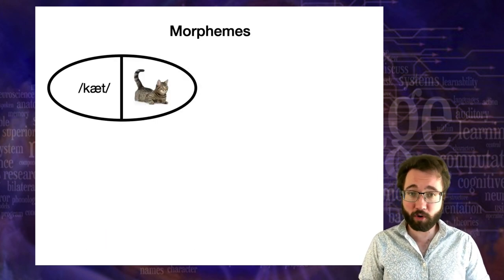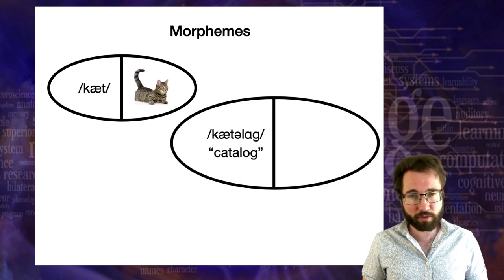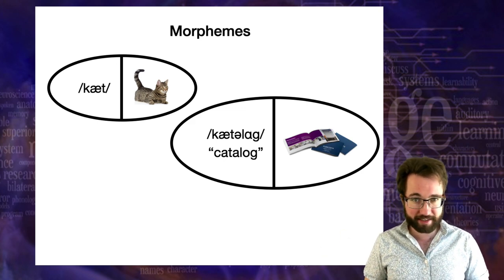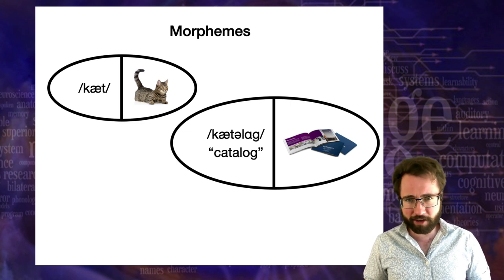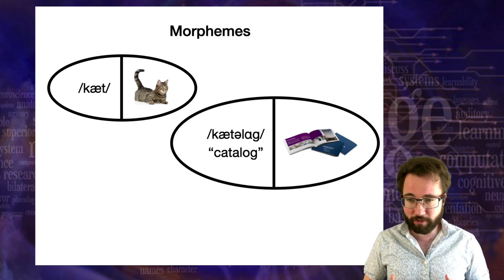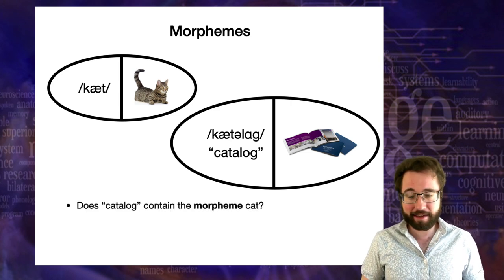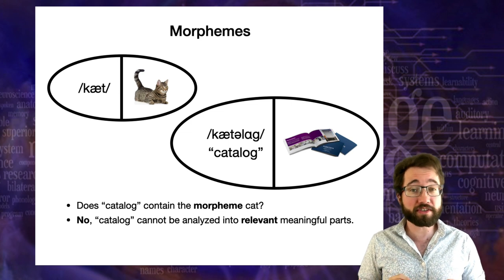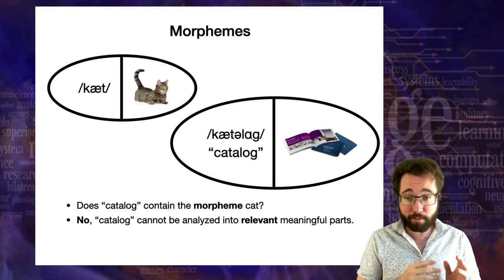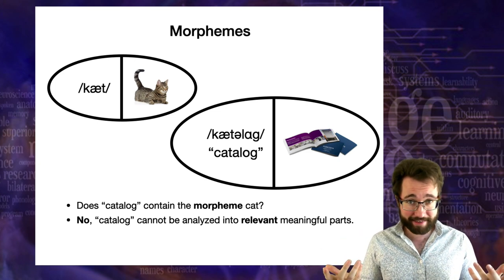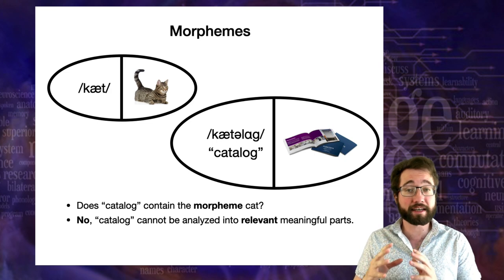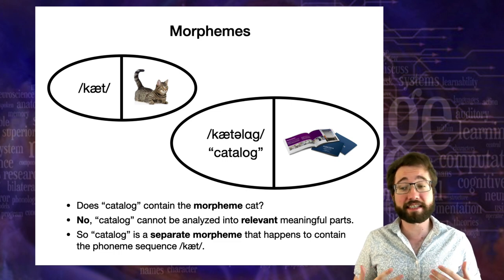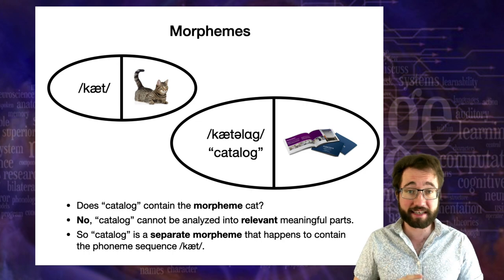Here's another example. We have the morpheme 'cat' referring to the feline creature. We also have the word 'catalog,' which refers to items containing listed information. Does 'catalog' contain the morpheme 'cat'? No — because 'catalog' cannot be analyzed into relevant meaningful parts. A catalog has nothing to do with a cat. The morpheme 'cat' is not making a regular contribution to the meaning of 'catalog.' Catalog is a separate morpheme that just happens to contain the phoneme sequence 'cat.'